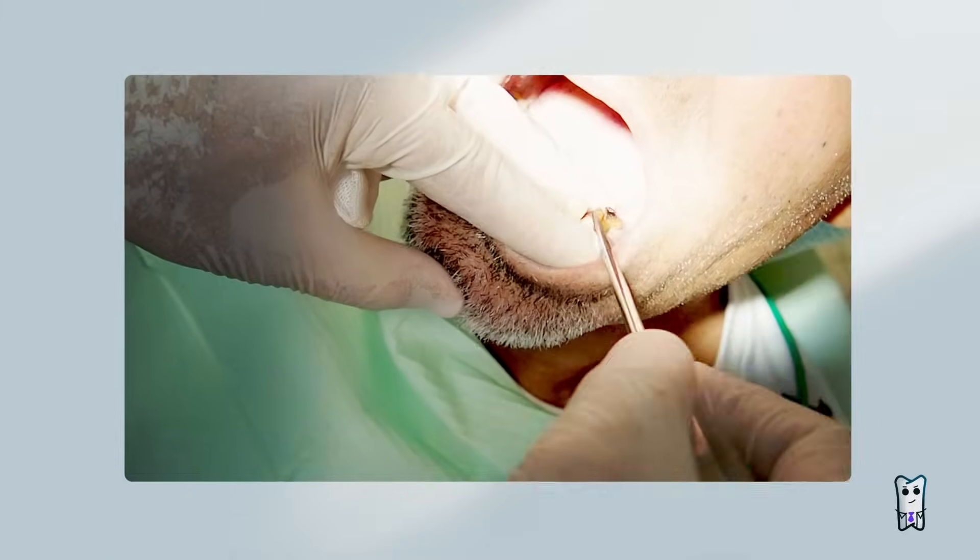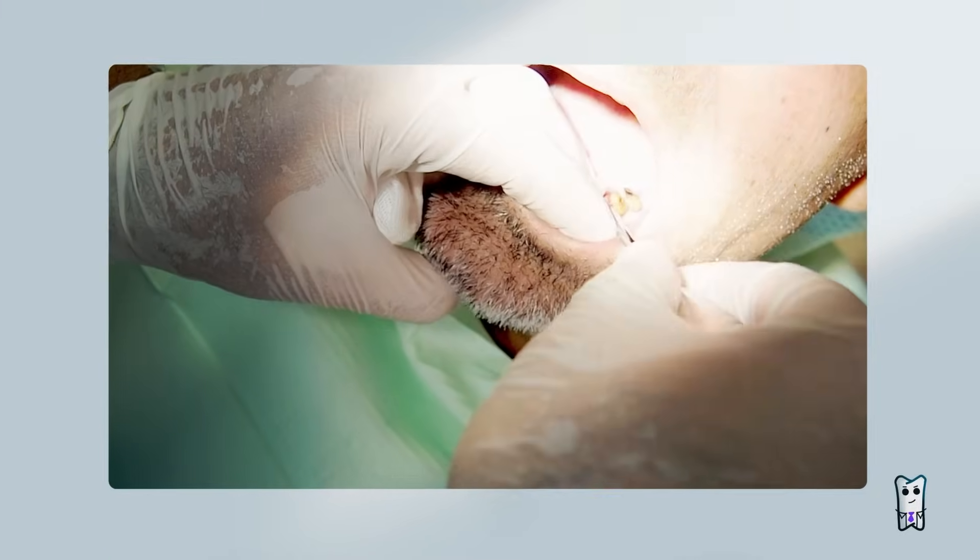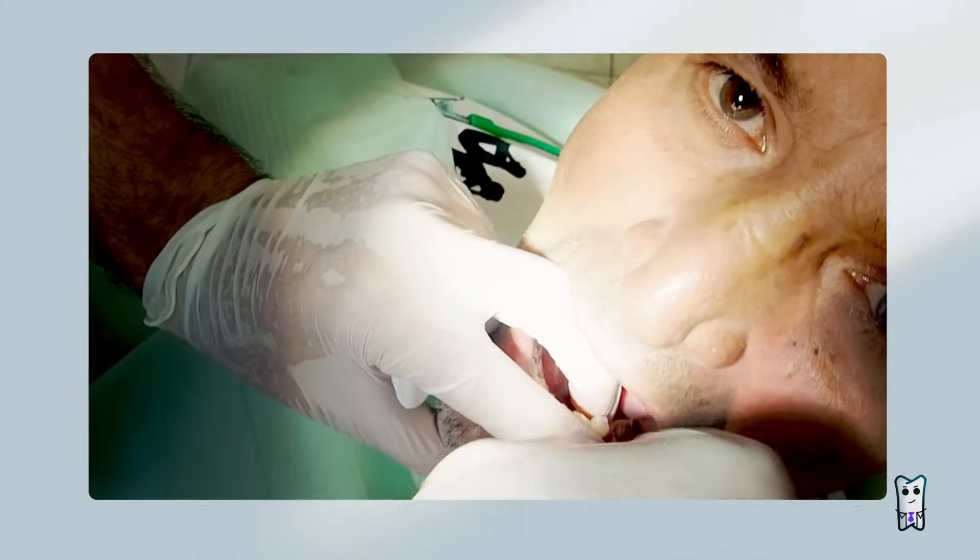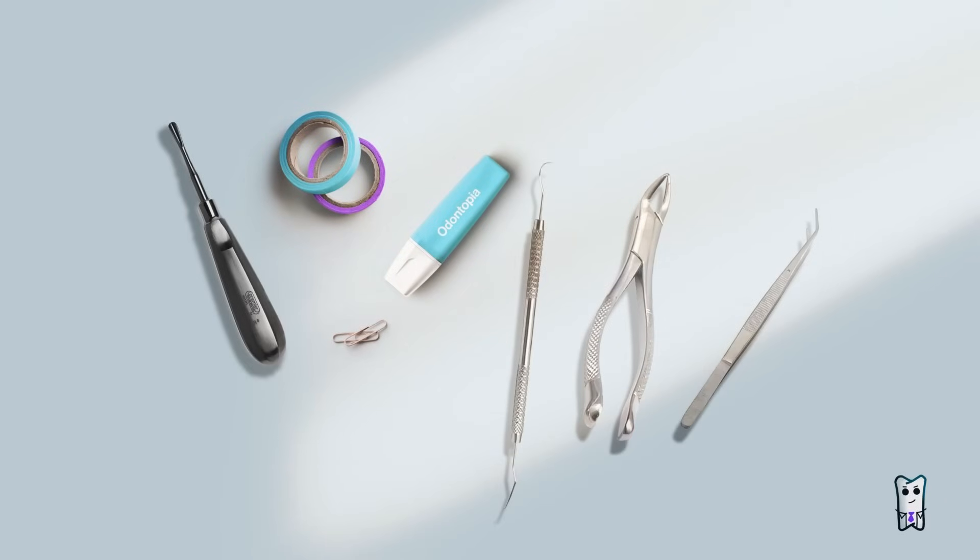Quick tip: if you are extracting multi-rooted teeth with separated roots, luxate one of the roots and when it's already luxated, don't extract it, but use it as fulcrum for the other roots to be luxated. And then extract them both.